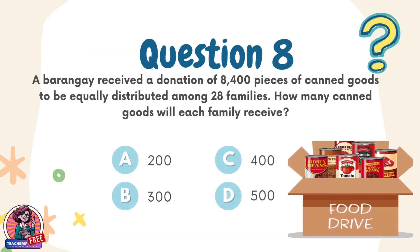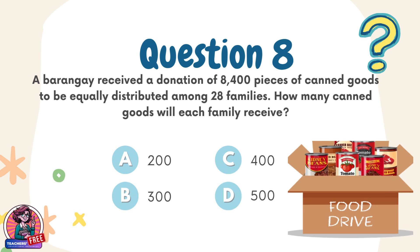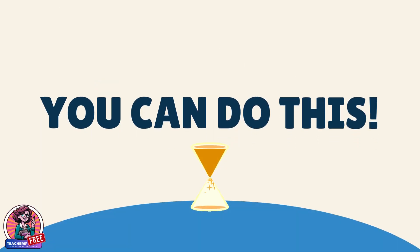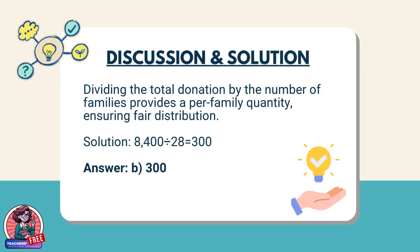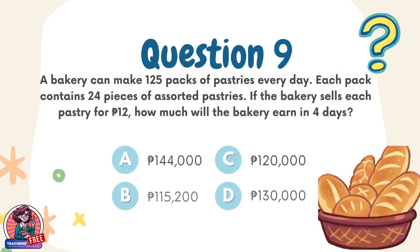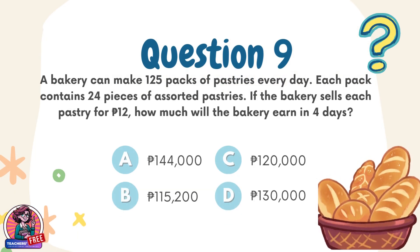Question 8. A barangay received a donation of 8,400 pieces of canned goods to be equally distributed among 28 families. How many canned goods will each family receive? Choices: A. 200, B. 300, C. 400, D. 500. Discussion: Dividing the total donation by the number of families provides a per-family quantity, ensuring fair distribution. Solution: 8,400 ÷ 28 = 300. Answer: B. 300.